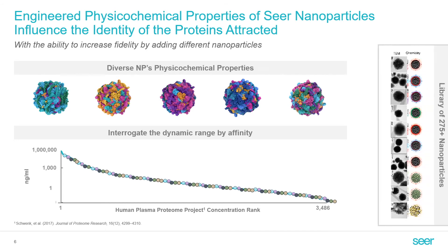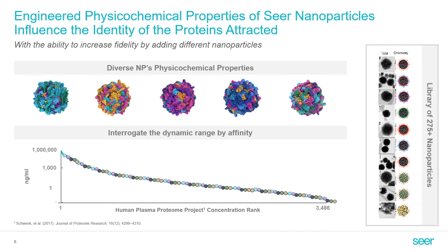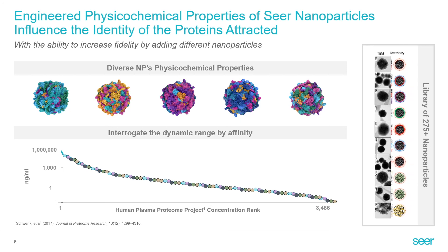Our team has made over 275 distinct nanoparticles, and each of these nanoparticles has a unique physicochemical property that gives it a unique pattern of protein sampling. The physicochemical potential for nanoparticle design is almost limitless.